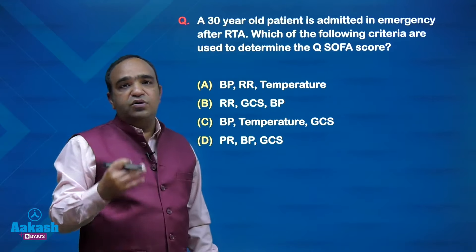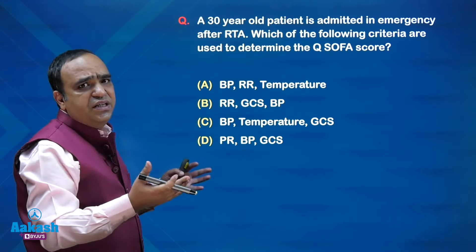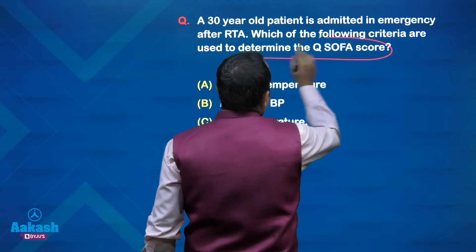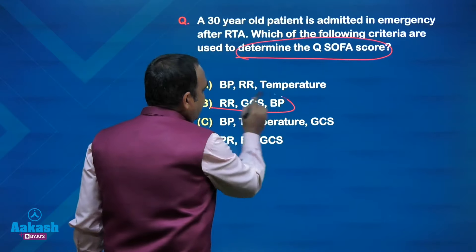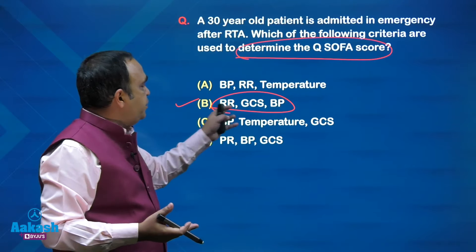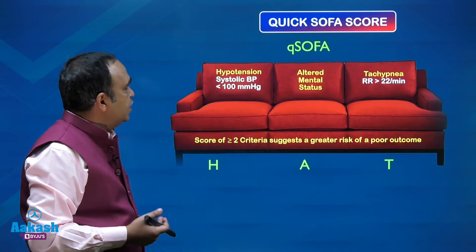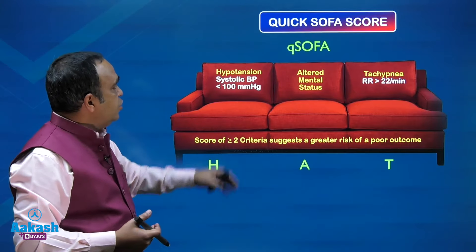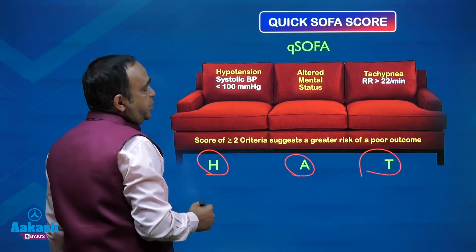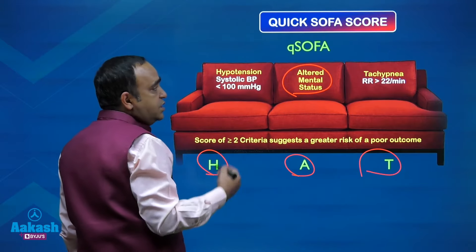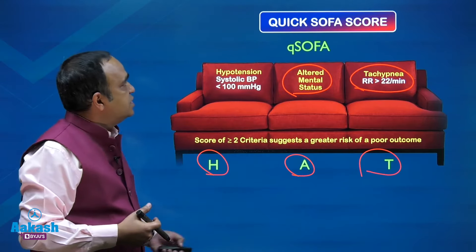A marked question on the qSOFA score. A 30-year-old patient admitted after RTA — the history is irrelevant; just look at what criteria are used for the qSOFA score. qSOFA score includes: mental status (Glasgow Coma Score), systolic blood pressure, and respiratory rate. The mnemonic is HAT — H for hypotension (low systolic BP), A for altered mental status (low GCS), and T for tachypnea (elevated respiratory rate).